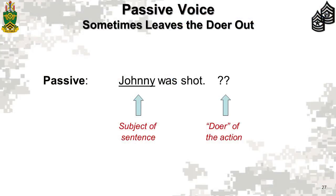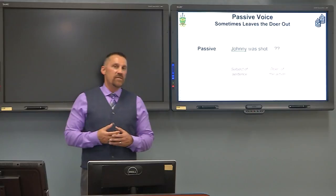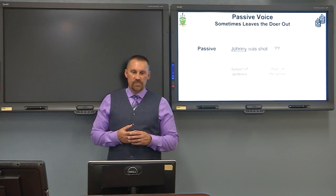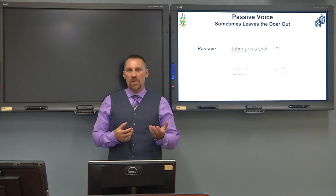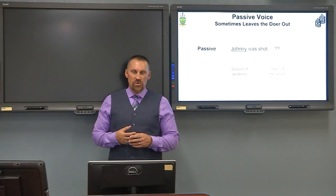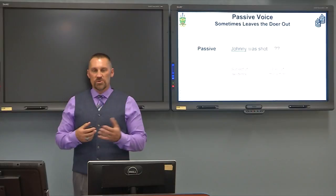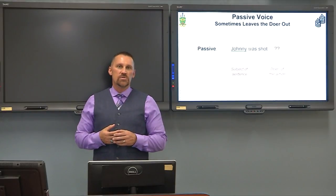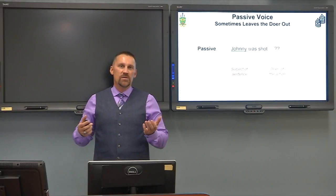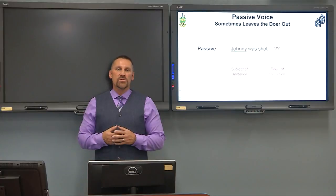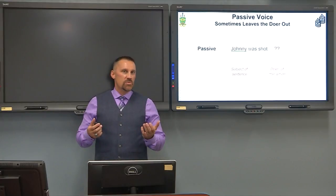In passive voice, sometimes we leave the doer out altogether. 'Johnny was shot' — not a lot of information there. We don't know who shot Johnny. All we know is that an action happened; we know who the receiver was, but we don't know who did the action. Imagine writing orders like this, leaving out the person or unit responsible — everybody would be wondering who's supposed to do the action.